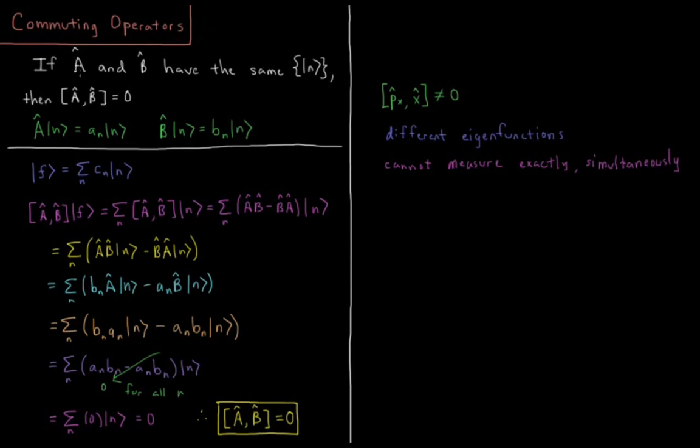So as I said, we have an operator A and an operator B. Each of those is going to have eigenfunctions, so A acting on function N gives AN times N. So same function on both sides, and this is a constant value.